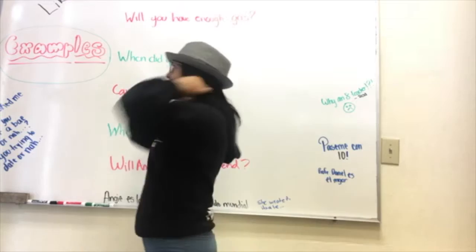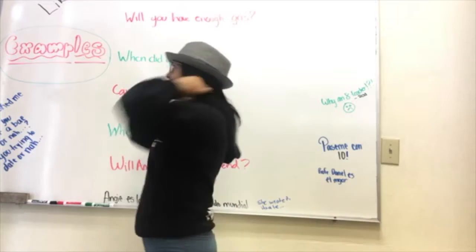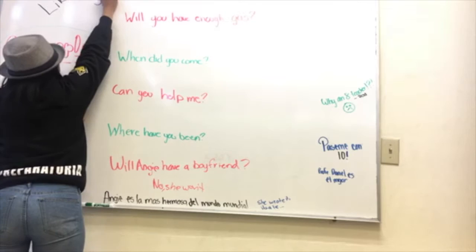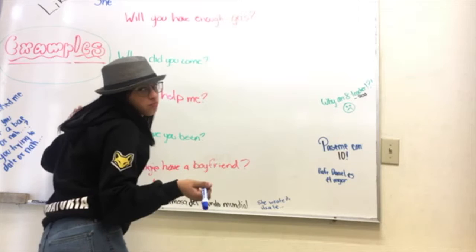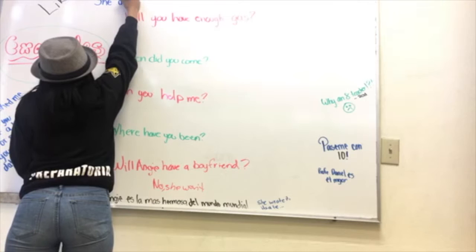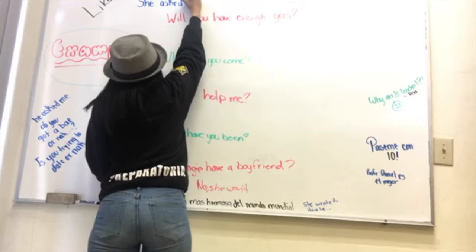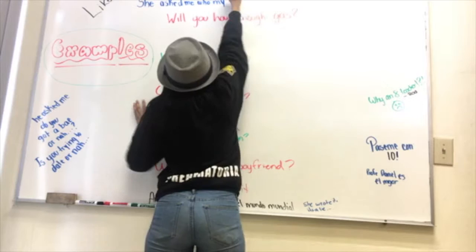Here are the examples for reporting questions. For example, when they ask 'Who is your crush?' — the subject would be 'she', because you need the subject, the person who asked the question. Then 'asked', because she's asking you. Then 'me', because she's asking me. So it becomes: 'She asked me who my crush was.'